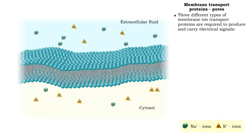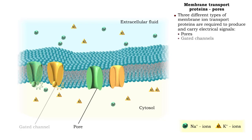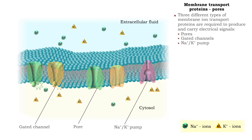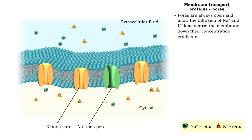Excitable cells need three different types of membrane ion transport proteins to produce and carry electrical signals. These proteins include pores, gated channels, and ion pumps. Sodium and potassium pores are always open, allowing these specific ions to diffuse down their concentration gradients.